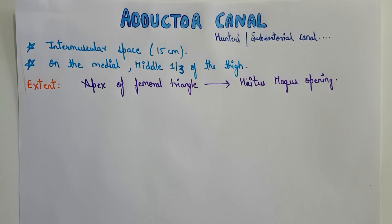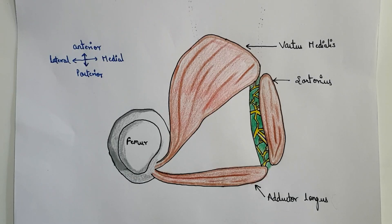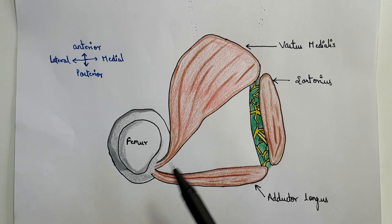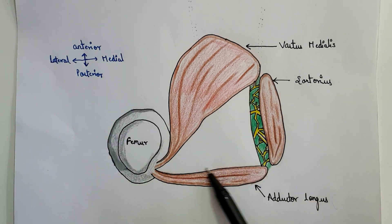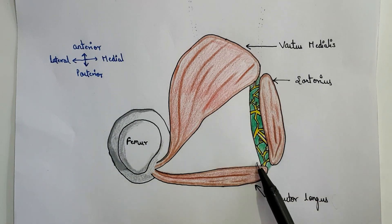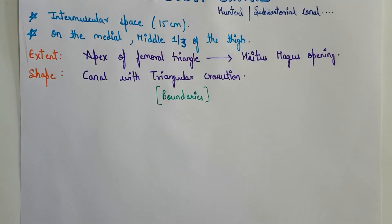Now let us look at the shape of the adductor canal. The adductor canal is of triangular cross-section. This diagram represents the transverse section of the adductor canal, in which you can easily see that the adductor canal is of triangular cross-section.